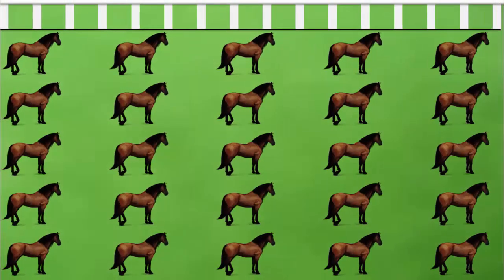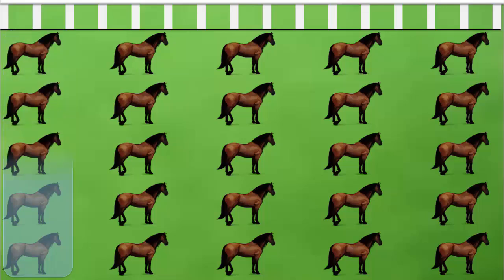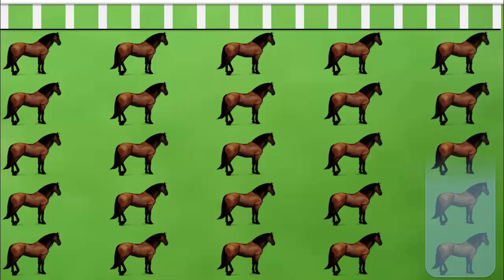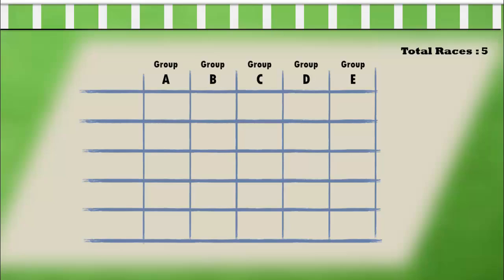You first need to race all the 25 horses in groups of five, so we have five races. Capture the results in a table and name the race groups as A, B, C, D, and E.